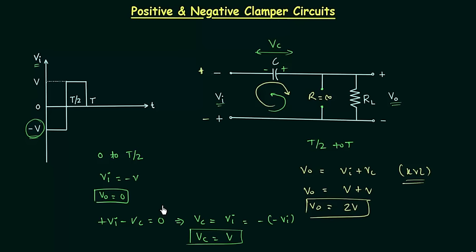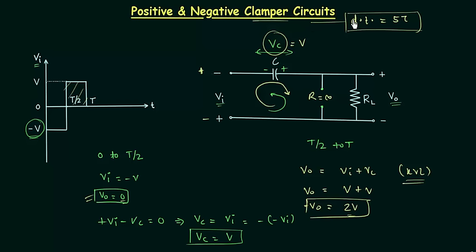Now we have the values of output voltage and can easily plot the output waveform. For the first half cycle from 0 to T/2, the output voltage is equal to 0V. For the second half cycle from T/2 to T, the output voltage is equal to 2V. There is one condition we always have to remember: the discharging time is equal to 5 times the time constant T. Because of this, the capacitor will not discharge during the second half cycle and will constantly provide voltage equal to V volts. This is a very important assumption in all clamper circuits, as I already explained in the last lecture.